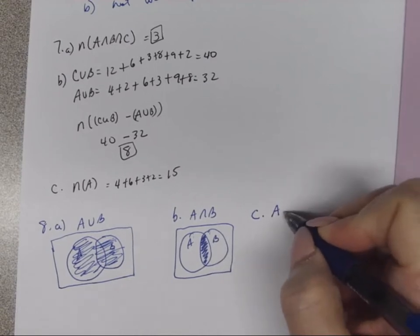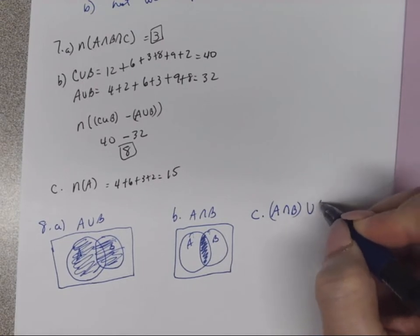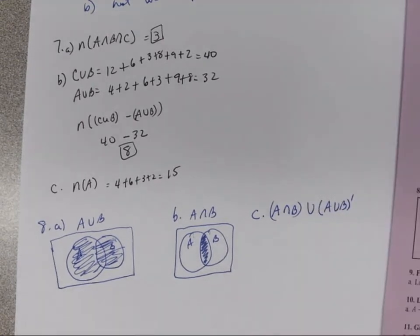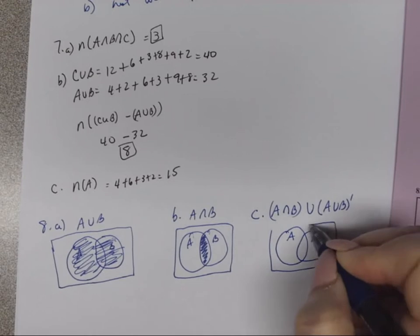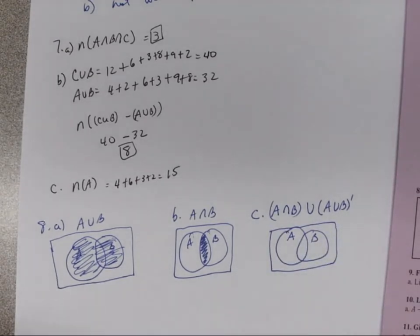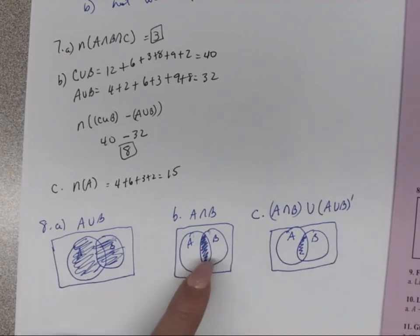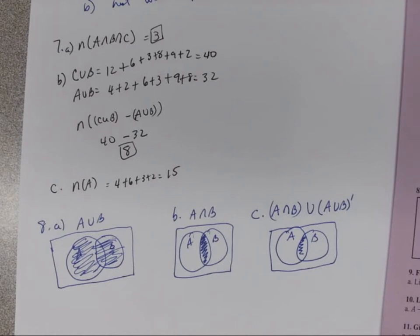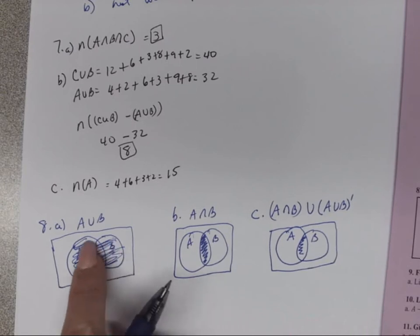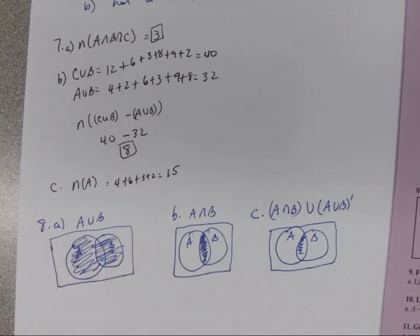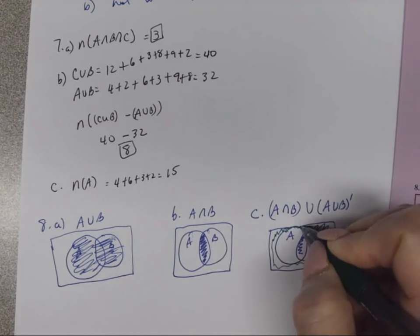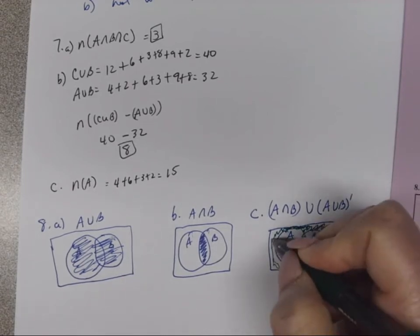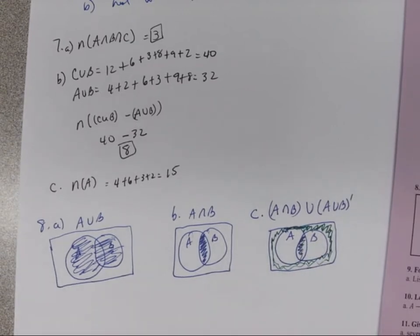For Part C, we're shading (A intersect B) union (A union B) complement. A intersect B is just the middle overlap. The complement of A union B is everything outside both circles. So we shade the middle intersection plus everything outside both circles.